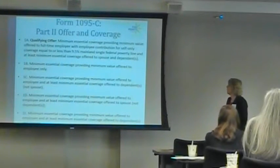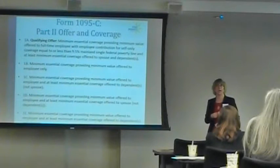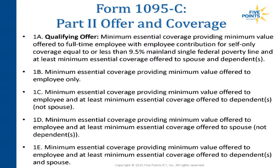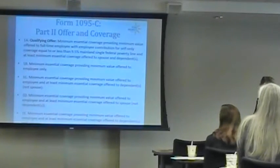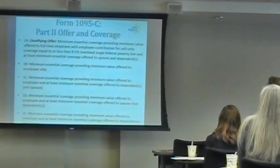Here are the line 14 codes. A qualifying offer — not to be confused with a qualifying health plan under the exchange — means you're offering minimum essential, minimum value, affordable coverage where the employee contribution is less than 9.5% of the mainland single federal poverty limit number. For 2015 that is $11,770, which works out to $92 and change per month.